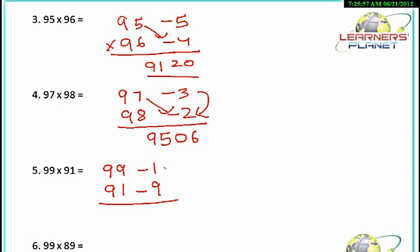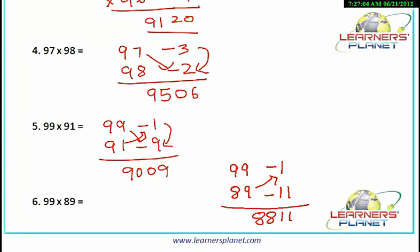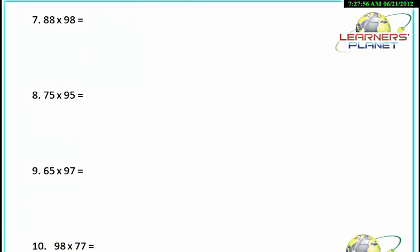Similarly, 99 into 91: it's minus 1 and minus 9. 1 into 9 is 9, but we fill two digits so we write 09. The subtraction gives us 90, so the answer is 9009. Then 99 into 89: minus 1 from 100, minus 11 from 100. 11 into 1 is 11. 89 minus 1 gives 88. So the answer is 8811.